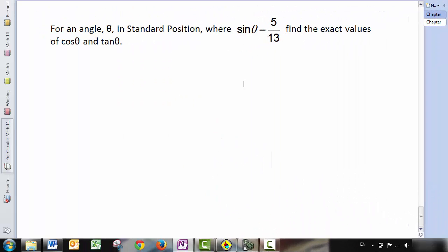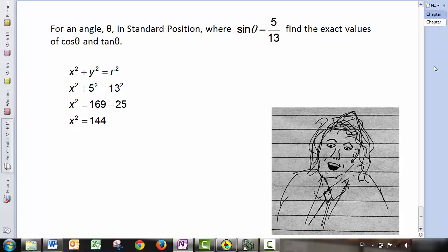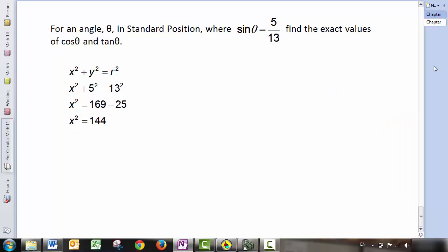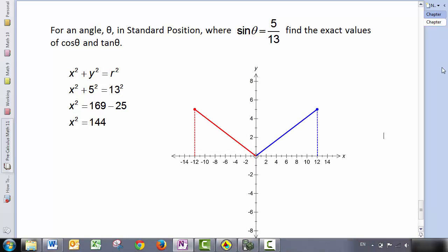For an angle theta in standard position, where sine theta is five over 13, find the exact values of cos theta and tan theta. If sine theta is five over 13, this means that Y is five and R is 13. So solve for X. X squared plus Y squared equals R squared, giving us X squared is 144. Now here's where half of you are going to say that X is equal to 12, forgetting that it's also possible for X to equal negative 12. Now originally we were told that sine is positive, which means that our angle theta could be in quadrant one or in quadrant two. We can't just assume it's in one at the expense of the other.